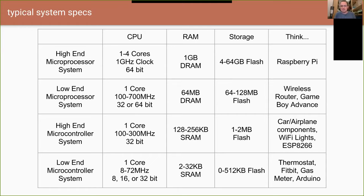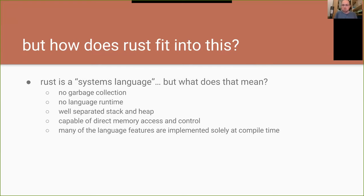So how does Rust fit in all this? A lot of people describe Rust as a systems language, but what does that mean? To me, what makes a language a systems language is that there's very little sugar or management between the code you write and the hardware you're interacting with. Rust has no garbage collection — important especially for real-time systems, where you don't want your system running off collecting memory while checking whether to set off a smoke alarm. It also has no language runtime — when you call a function, that's directly executing code with very little virtualization.